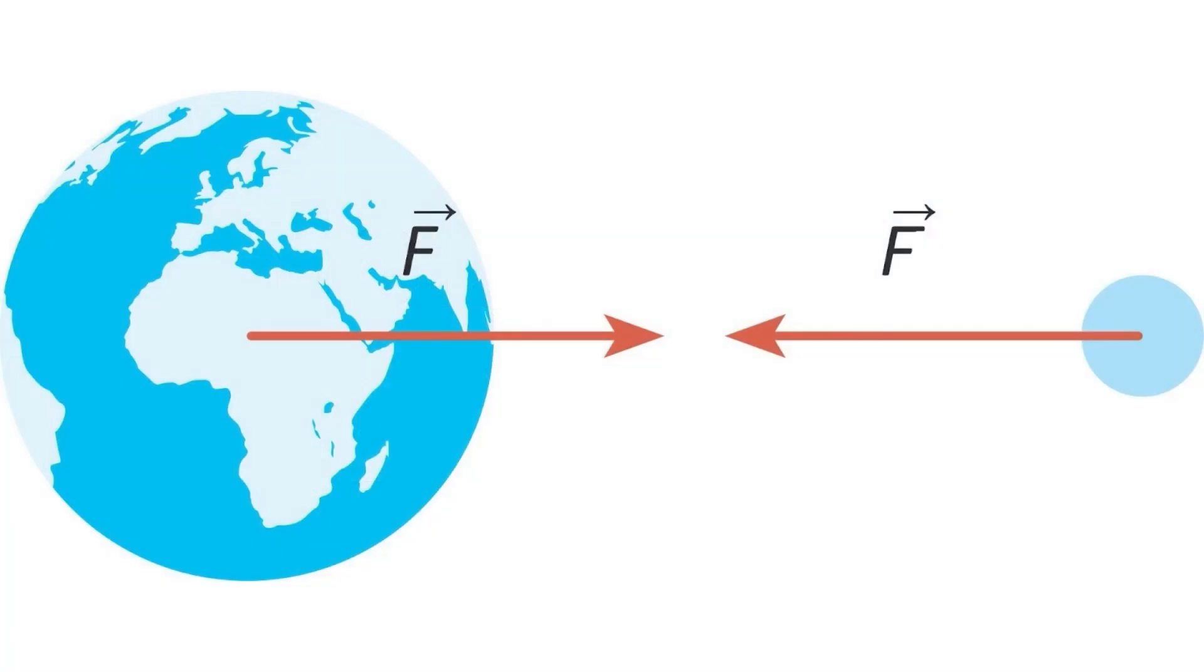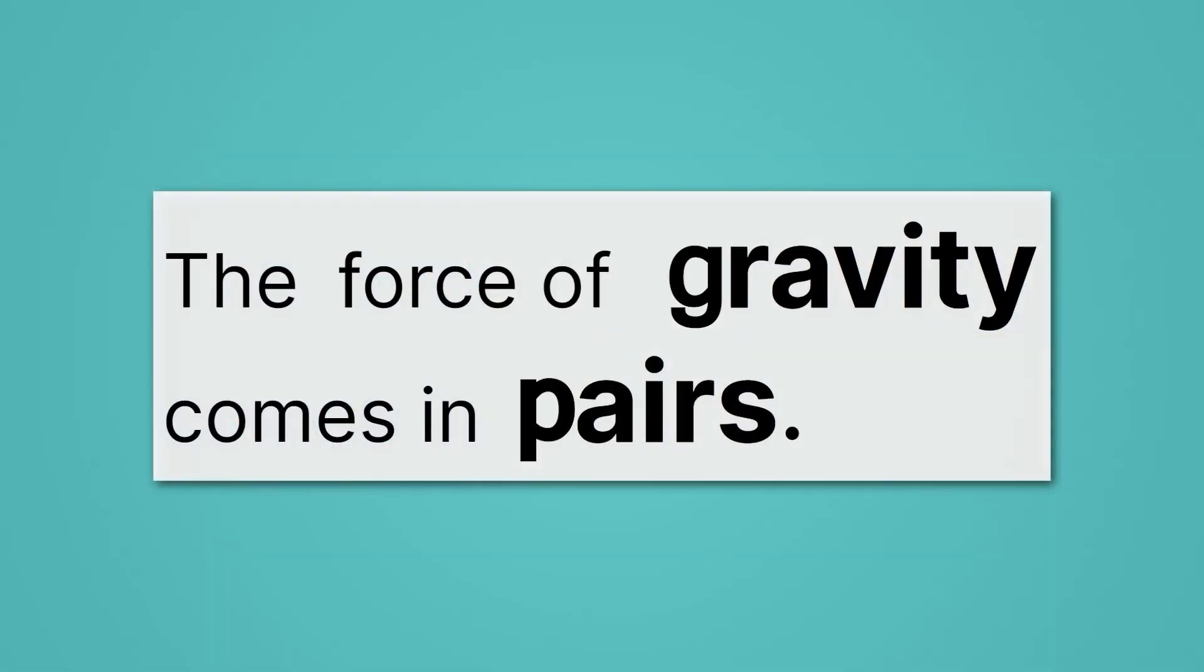And what we also should notice is that we have two forces there. One is that the Earth is attracted to the moon, and the other is that the moon is attracted to the Earth. It goes both ways. The force of gravity always comes in pairs.